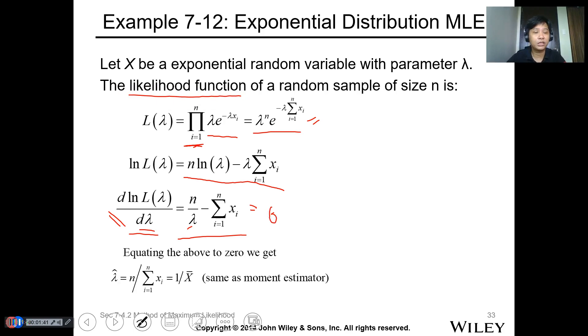Equating this expression to 0, you can solve for your lambda hat estimator. As you can see, the mean is equal to 1 over lambda for the exponential random variable, which equals the expected value of X. So this is just 1 over X-bar. Same as the moment estimate.